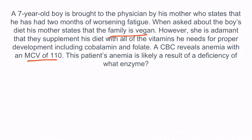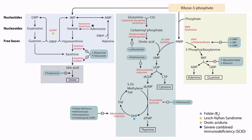The family is vegan, which is a risk factor for vitamin B12 deficiency that could cause macrocytic anemia. Folate deficiency could also cause macrocytic anemia. However, the question stem states that his diet has been supplemented with both vitamin B12 and folate, making both of these deficiencies less likely. Therefore, this patient's macrocytic anemia is likely due to orotic aciduria, which is due to a deficiency of UMP synthase. Because de novo pyrimidine synthesis is impaired, thymine and cytosine are unable to be produced, meaning red blood cells have a difficult time replicating DNA, resulting in macrocytic anemia.